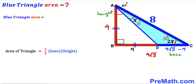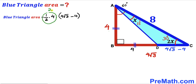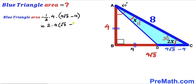So the area equals one-half times 4 times (4√3 minus 4). One-half times 4 gives us 2, and factoring out 4 from the parentheses gives 2 times 4 times (√3 minus 1), which equals 8 times (√3 minus 1). The area of the blue shaded triangle is 8(√3 − 1) square units.